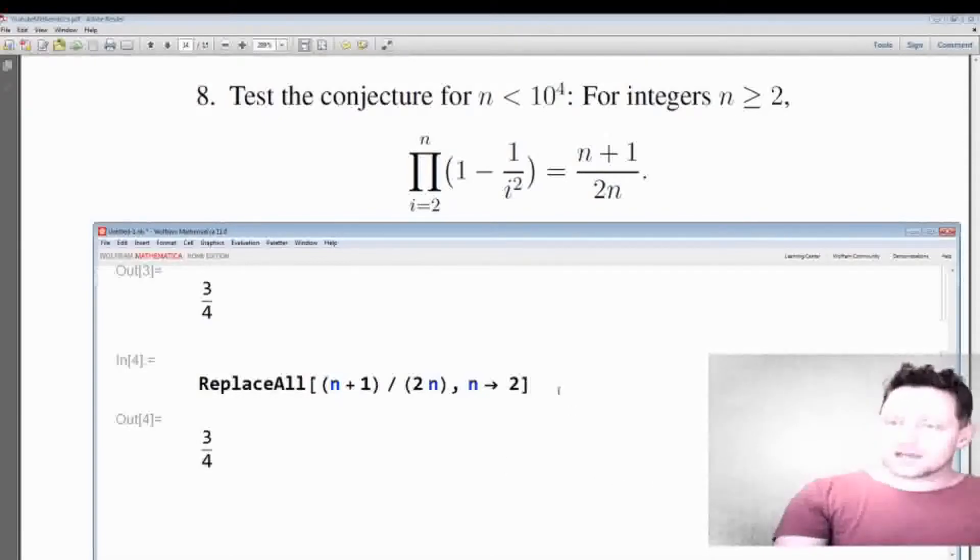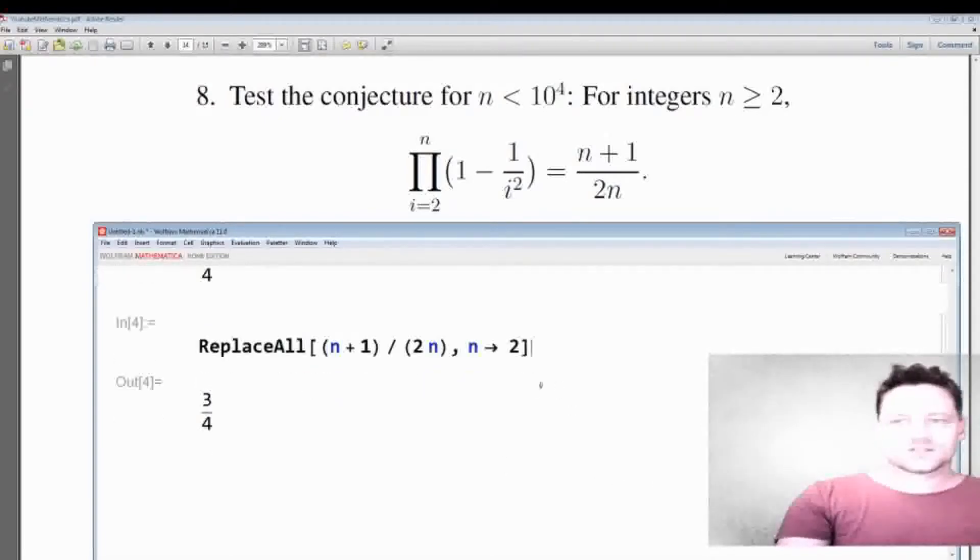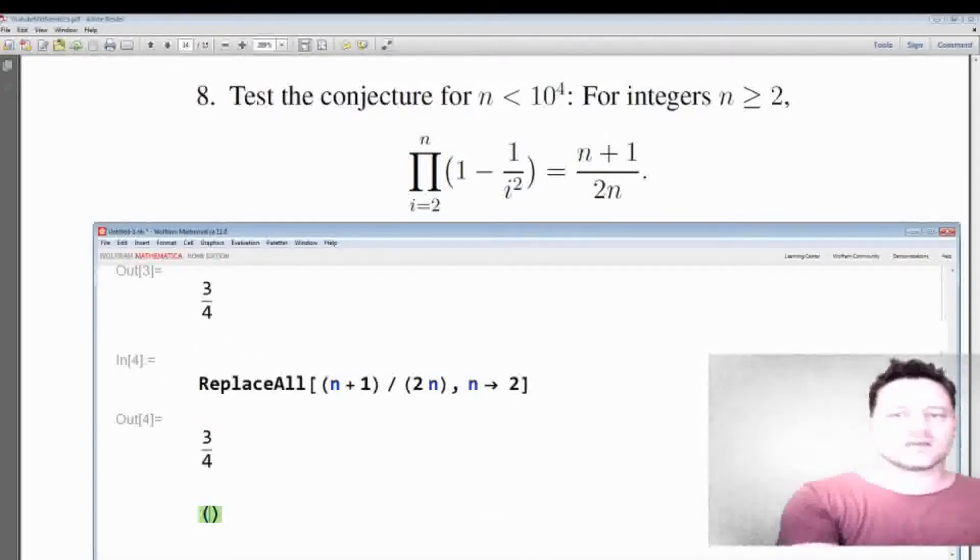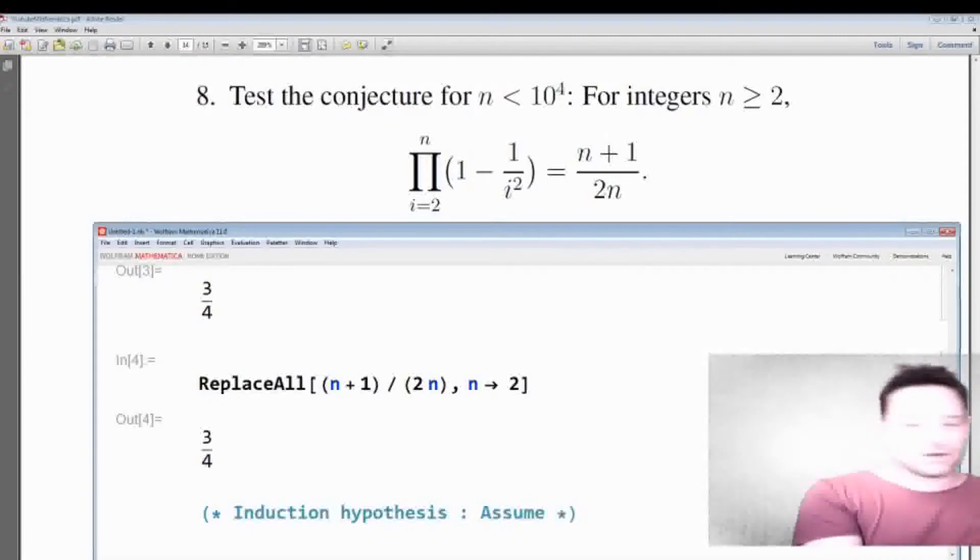Now the next step is to write down an induction hypothesis. All right, so I'll write this in comment form and I'll say what it is. Induction hypothesis: in this case we will say assume that, so I'll just write this in shorthand, so product from i equals 2 to k,